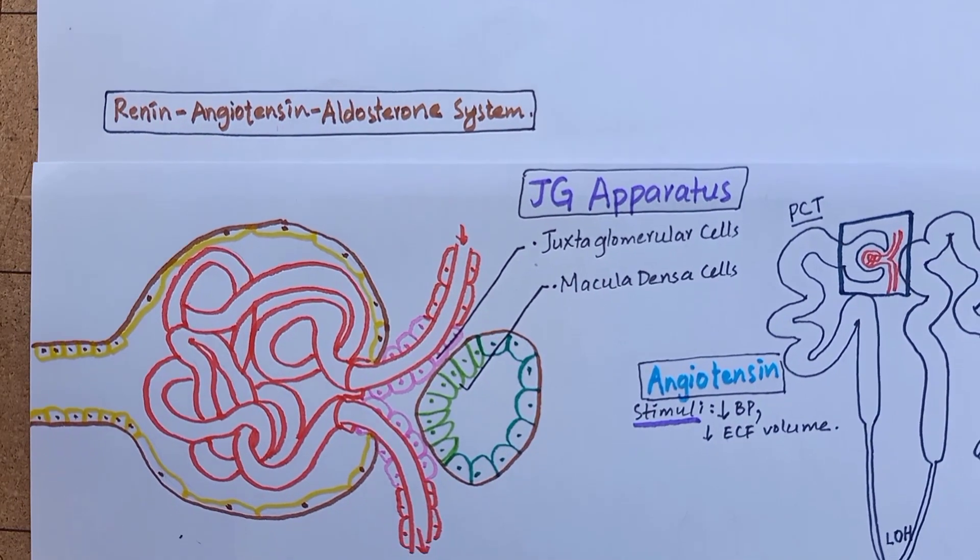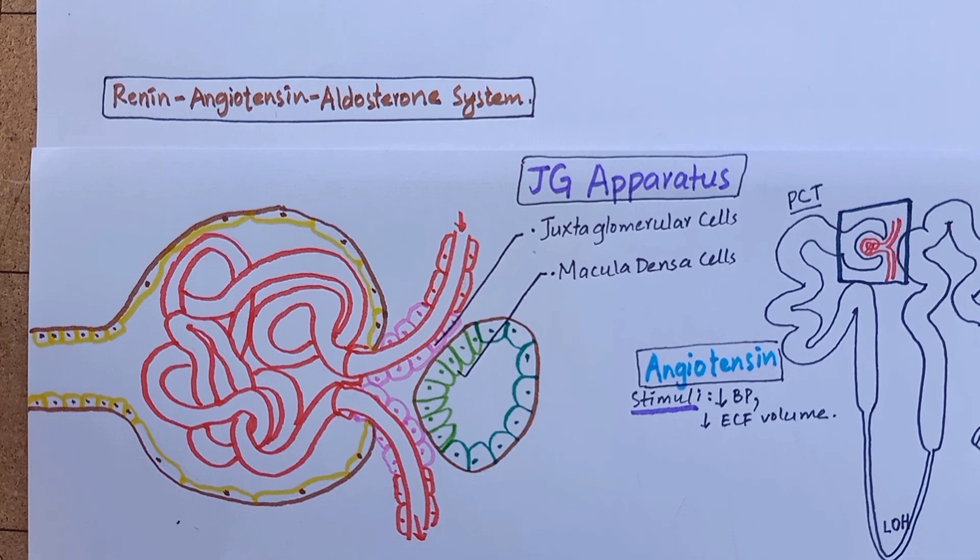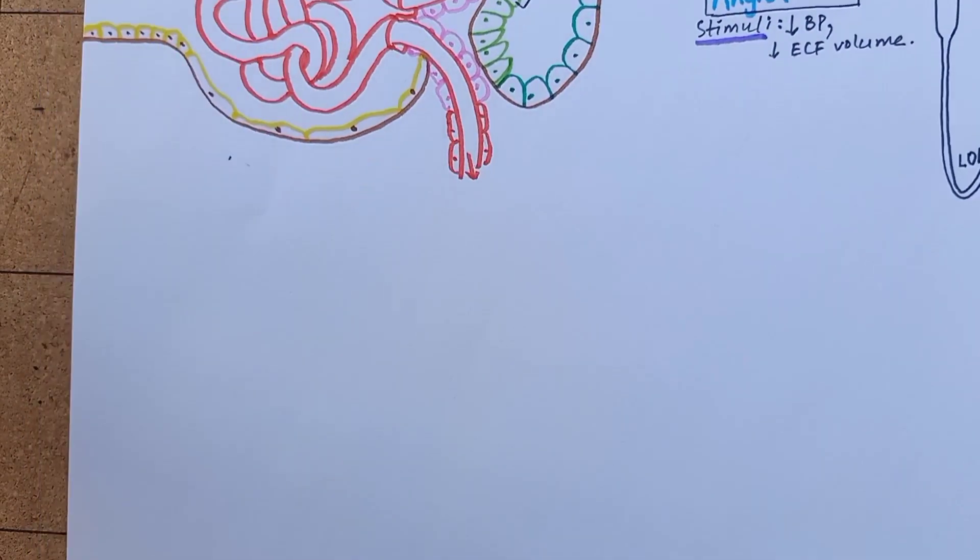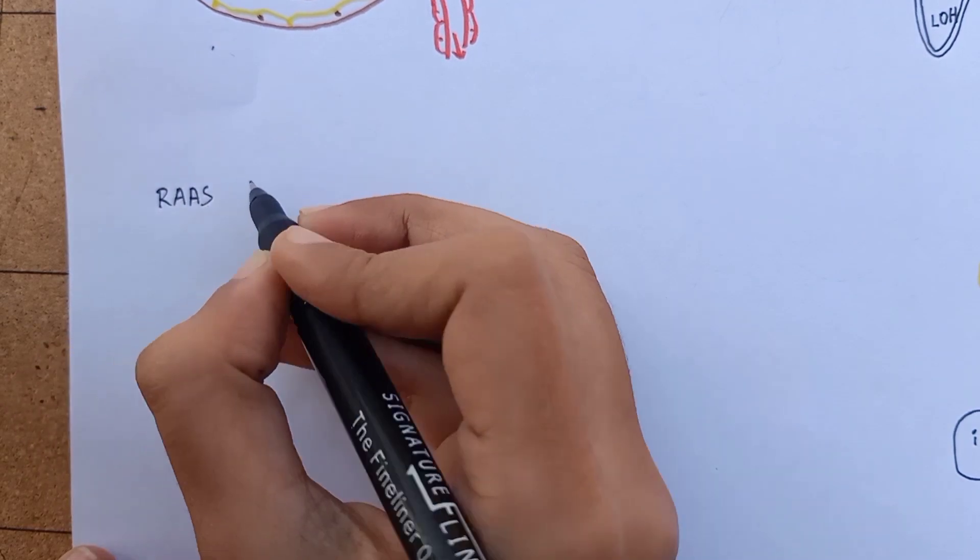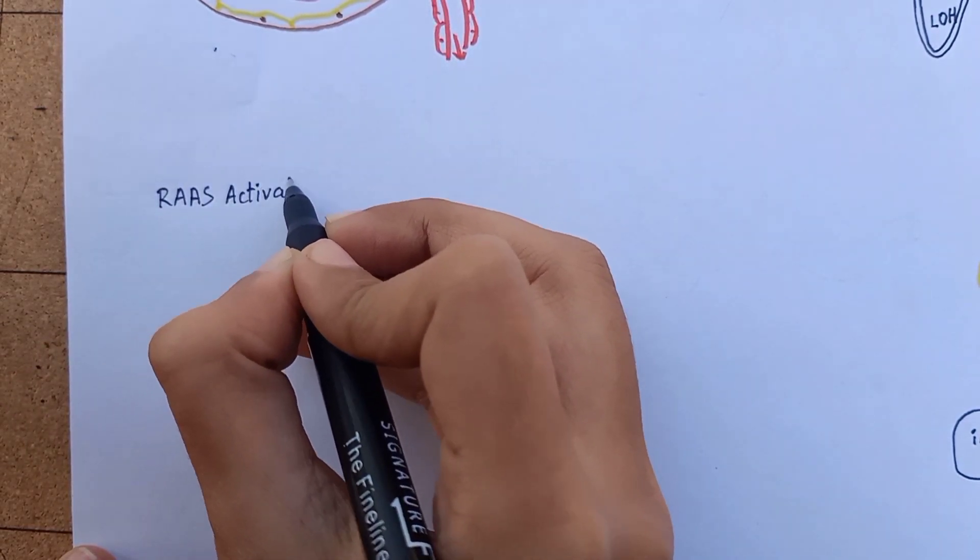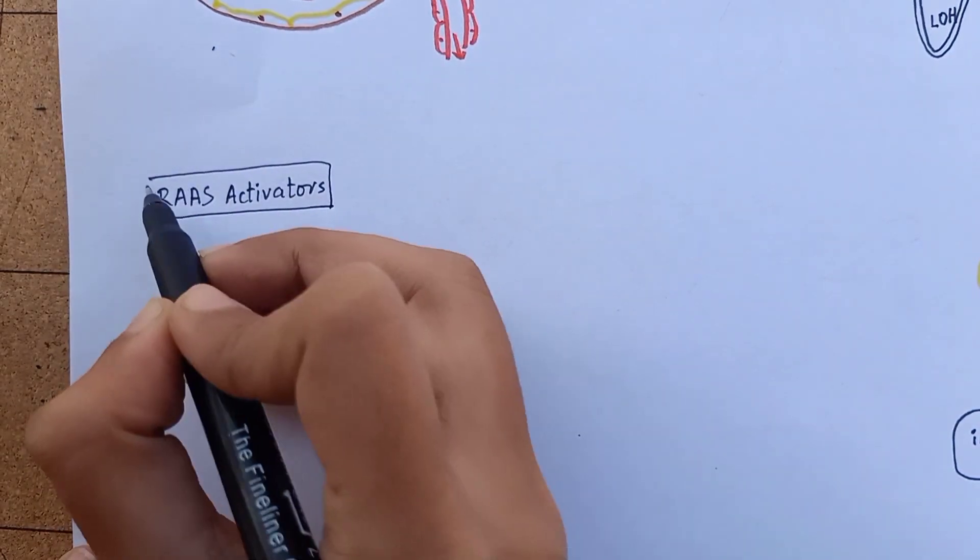Renin is synthesized and stored in juxtaglomerular cells in an inactive form called prorenin. There are three mechanisms of renin release, or we can say there are three activators of renin-angiotensin-aldosterone system.